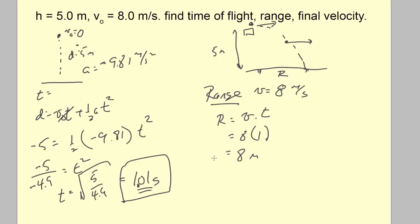Looking at the results, I have 8.2 written down from the simulation. The difference is because the time in the simulation is a few hundredths of a second longer — the projectile had to stay on the platform for those extra hundredths before it began to fall. That accounts for the discrepancy.